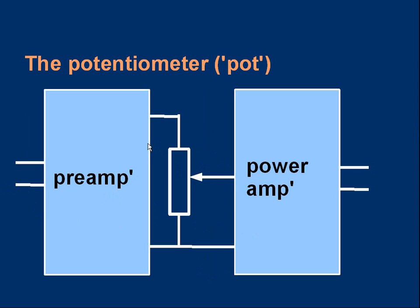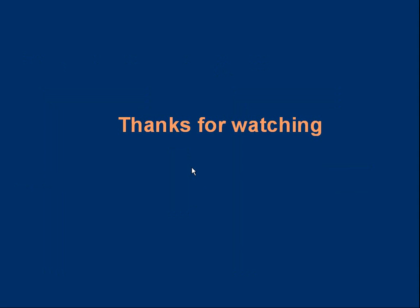Then you could have a potentiometer connected to the power amp, which drives the loudspeakers. And adjusting the potentiometer would alter the volume. So it's a volume control in that example. That's it. That's basically a quick introduction to the potentiometer.